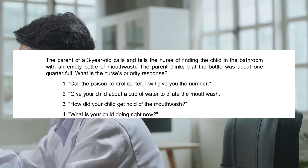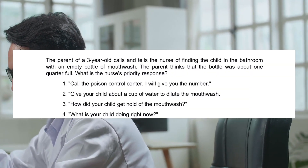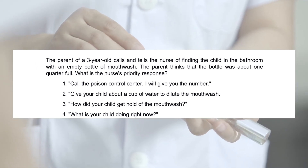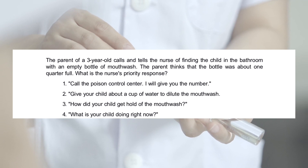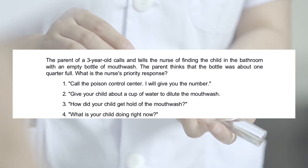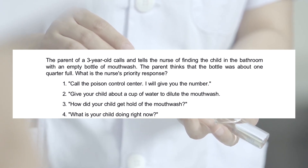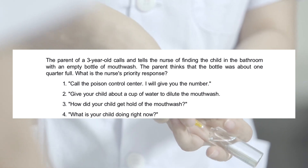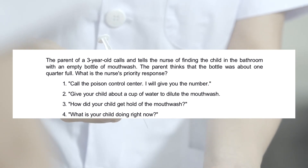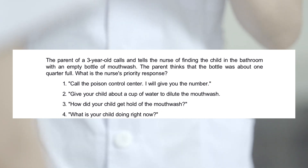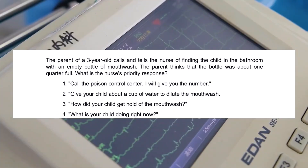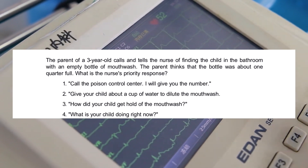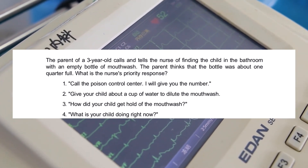The parent of a 3-year-old calls and tells the nurse of finding the child in the bathroom with an empty bottle of mouthwash. The parent thinks that the bottle was about one-quarter full. What is the nurse's priority response? 1. Call the poison control center — I will give you the number. 2. Give your child about a cup of water to dilute the mouthwash. 3. How did your child get hold of the mouthwash? 4. What is your child doing right now?